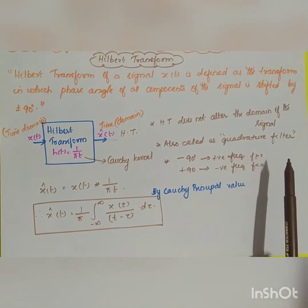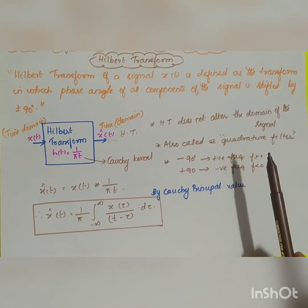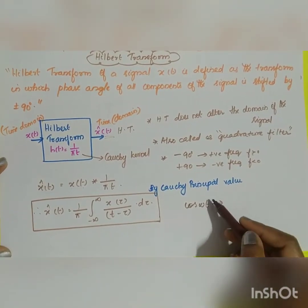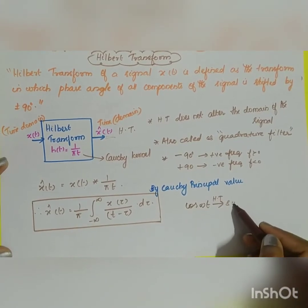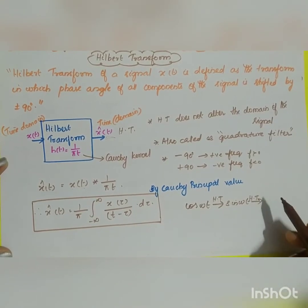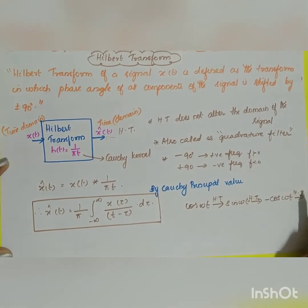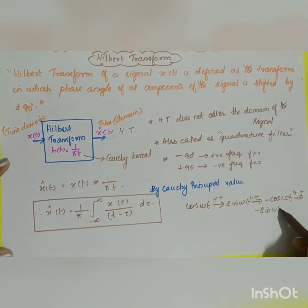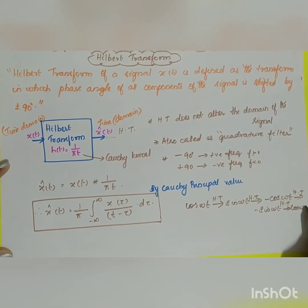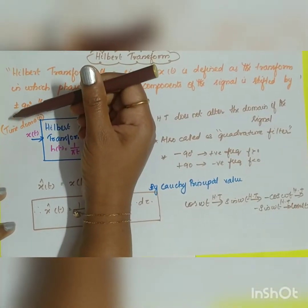The Hilbert transform is also called a quadrature filter. The reason is that if you give a cosine as input, you get a sine as output. For example, if the input is cos(ωt), applying the Hilbert transform gives a 90-degree phase shift, resulting in sin(ωt). If sin(ωt) is the input, you get −cos(ωt). Applying Hilbert transform again gives −sin(ωt), and once more gives back cos(ωt). Each application produces a 90-degree phase shift, hence it is called a quadrature filter.